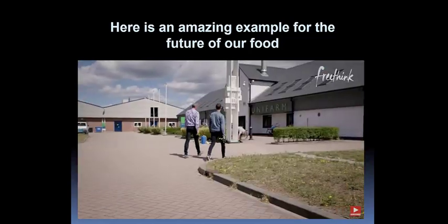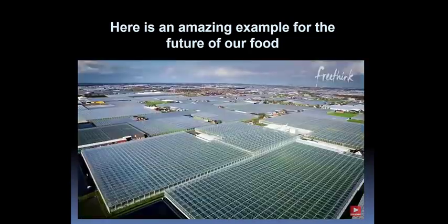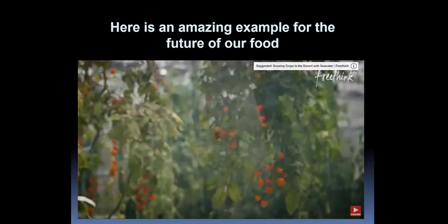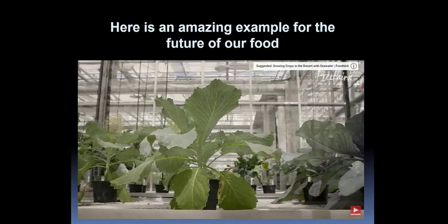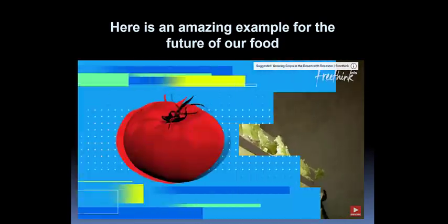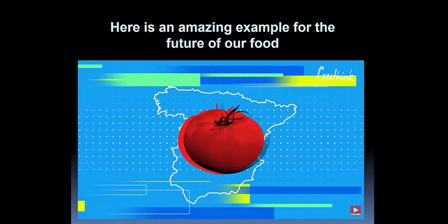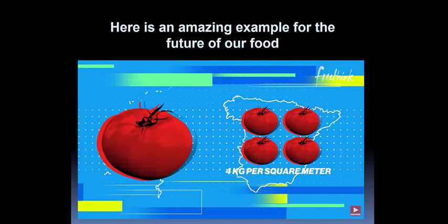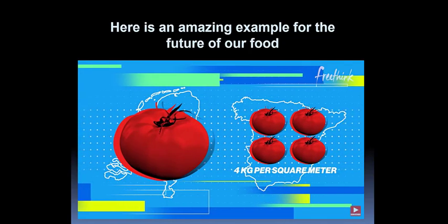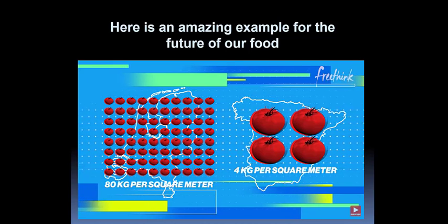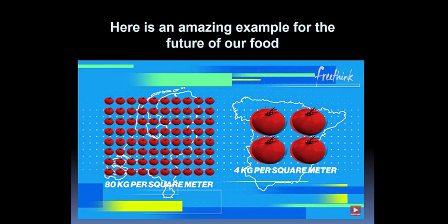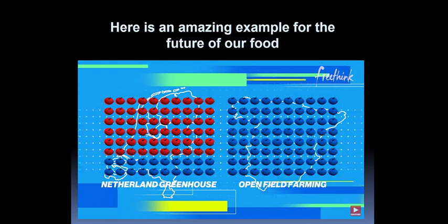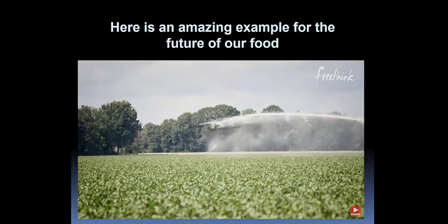There's a very nice example about tomatoes, which gives a good insight into how we want to produce food in a sustainable way. If you produce tomatoes in an open field in Spain, you end up with four kilograms per square meter at the end of the growing season. In a high-tech greenhouse in the Netherlands, you end up with 80 kilograms per square meter — which is 20 times more. But the best part is that those 80 kilograms of tomatoes are produced with four times less water compared to an open field situation. Water is one of the big challenges we face.